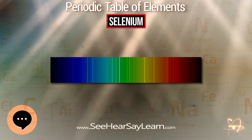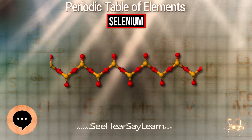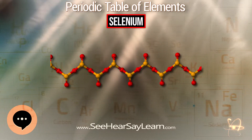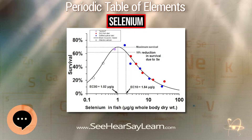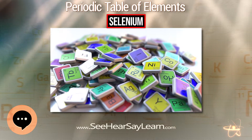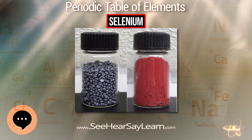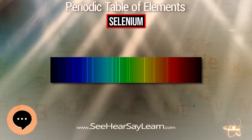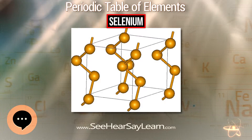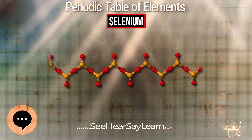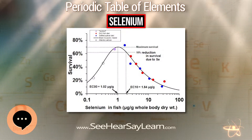Selenium also occurs in organic compounds such as dimethylselenide, selenomethionine, selenocysteine, and methylselenocysteine, all of which have high bioavailability and are toxic in large doses. On April 19, 2009, 21 polo ponies died shortly before a match in the US Open Polo Championship. Three days later, a pharmacy released a statement explaining that the horses had received an incorrect dose of an ingredient in a vitamin/mineral supplement that had been incorrectly prepared by a compounding pharmacy. Analysis of blood levels indicated selenium concentrations were 10 to 15 times higher than normal in blood samples and 15 to 20 times higher than normal in liver samples, and selenium was confirmed as the toxic factor.